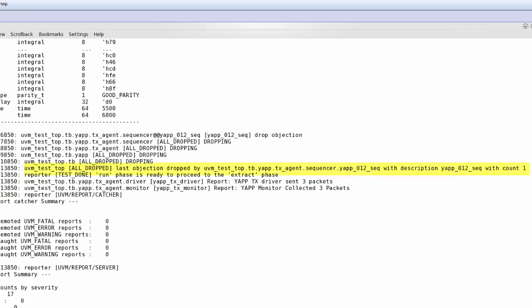It also executes the test class all_dropped, which prints the task arguments, telling us the last objection was dropped by the YAP012 sequence with the description argument of YAP012seq and a count of 1.